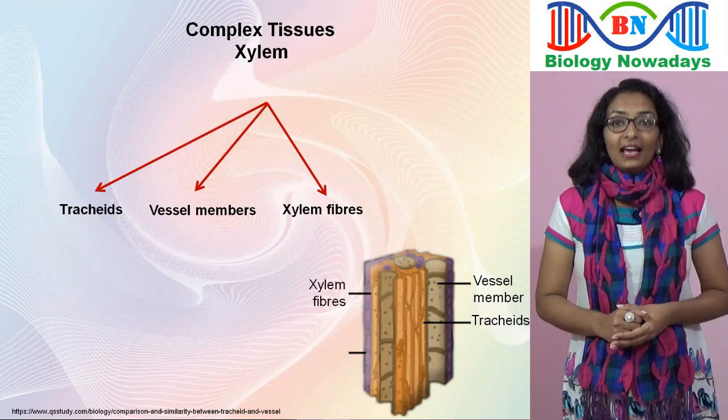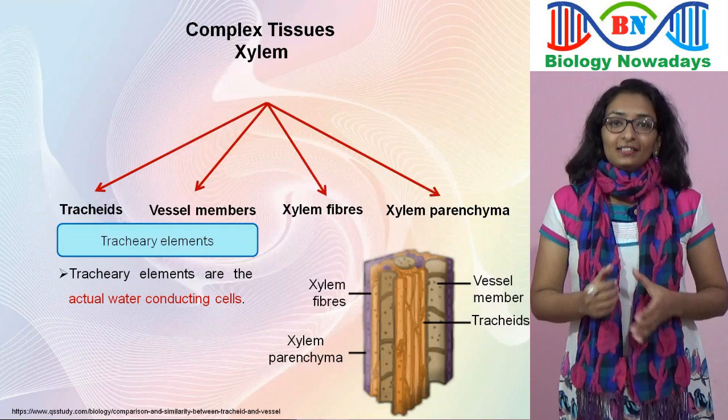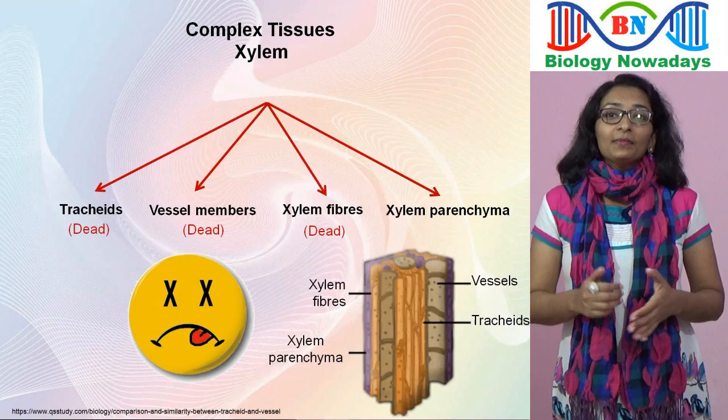Tracheids and vessel members are together called tracheary elements. They are the actual water conducting cells. An important feature to be noted about xylem is that most of the xylem components are dead at maturity. Only xylem parenchyma cells are living cells.